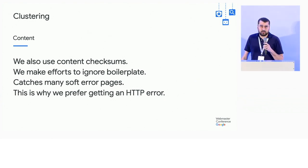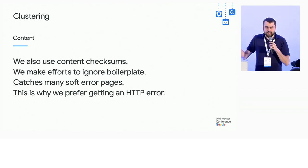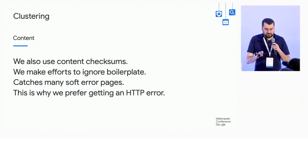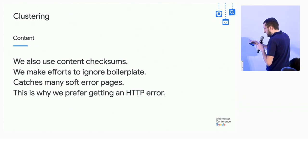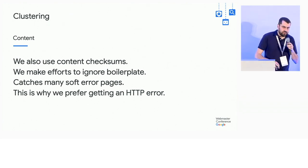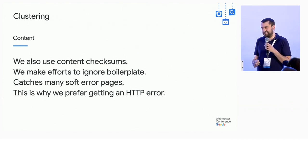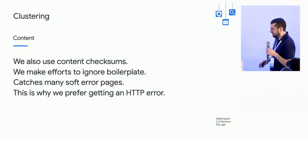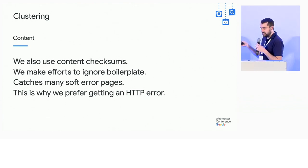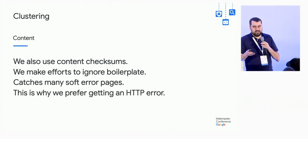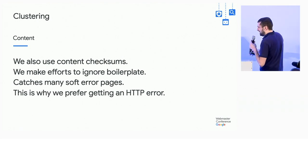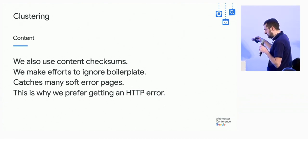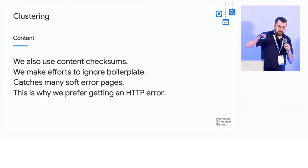In terms of content, to the surprise of no one, we take checksums of the content of your page and make various efforts to ignore the boilerplate. What might surprise you is that what sometimes gets caught here is what we call soft error pages — where someone serves us a 200 and then some fancy error message saying 'this page is not here.' We have machine learning models that try to catch these, but webmasters are very creative. This is why we prefer getting an HTTP error code, because then instead of duplicating your page, we can do proper error handling.